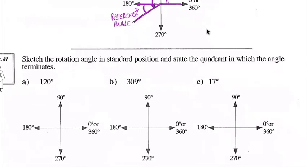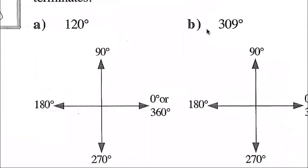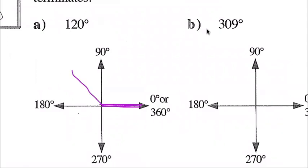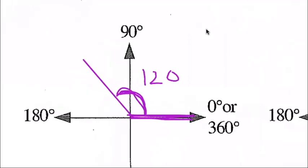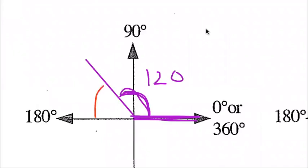Example one: sketch the rotation angle in standard position and state the quadrant in which the angle terminates. A rotation angle of 120 degrees — always starting here in standard position, counting counterclockwise. That's 90 all the way to here is 180, so 120 has to end somewhere in between. We're just looking for a sketch — you don't need to measure with a protractor. Label it 120 degrees.